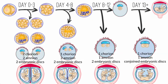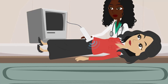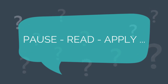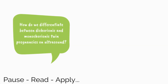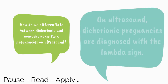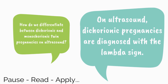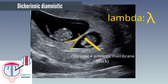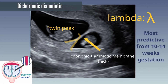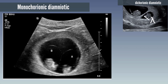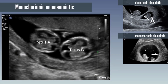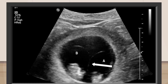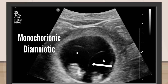Now that we know how twins can develop, let's revisit your examination with Molly. On ultrasound, dichorionic pregnancies are diagnosed with a lambda sign, also known as a twin peak, which is most predictive from 10 to 14 weeks — making early ultrasound critical in twin pregnancies. In a monochorionic-diamniotic pregnancy, there is only a thin dividing membrane with an absence of the lambda sign. In monochorionic-monoamniotic pregnancies, there is no dividing membrane. On the ultrasound with Molly, you see a thin dividing membrane representing the amniotic membrane. Molly has monochorionic-diamniotic twins.